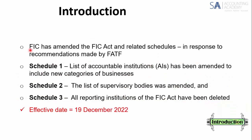From an introductory point of view, we know that FIC has amended the FICA Act and some schedules have been updated. This is in response to the recommendations made by FATF after they greylisted us. They've fast-tracked the legislation, which is why we saw the FICA Act amendments come through with an effective date of 19 December 2022 — the date it was promulgated. The main changes were to Schedule 1, where the list of AIs has been amended with three new categories of businesses. Schedule 2 updated the list of supervisory bodies, and Schedule 3 — all the reporting institutions — have been deleted and included in Schedule 1.